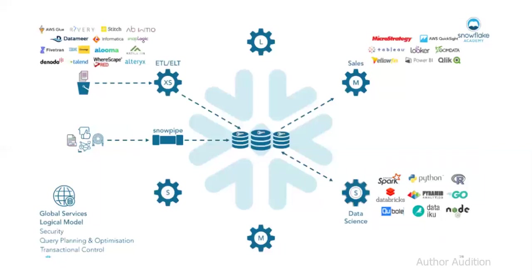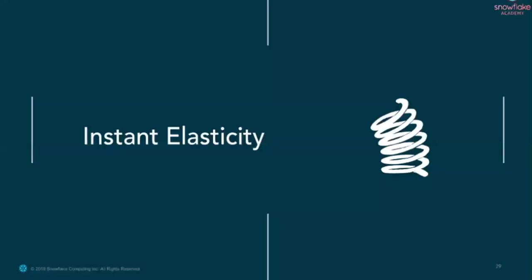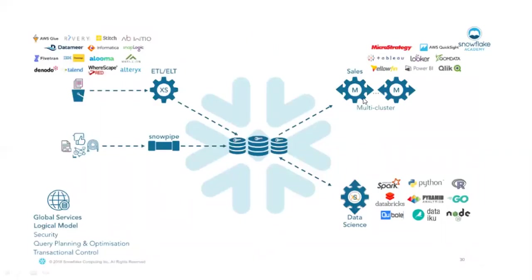You can maintain multi-cluster warehouses to provide services to ETL teams, reporting teams, data scientists, and continuous data integration using Snowpipe — giving each team a separate dedicated warehouse with concurrent access. Instant elasticity lets you manage multi-cluster setups for heavy loads, such as month-end reporting, providing dedicated compute instances to each team.